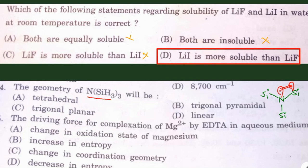The next question asks about the geometry of N(SiH3)3. Simple nitrogen derivatives are pyramidal (lone pair out of plane, non-planar). However, in N(SiH3)3, nitrogen's lone pair engages in backbonding with the vacant 3d orbital of silicon, converting the structure to planar. Therefore the hybridization is sp2, and the correct geometry is trigonal planar.